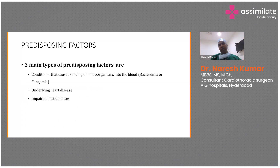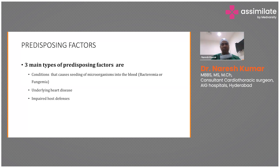Three main predisposing factors have been identified: first, conditions that cause seeding of microorganisms into the blood — bacteremia or fungemia from any procedure; second, underlying heart disease such as rheumatic heart disease causing valve stenosis or regurgitation, mitral valve prolapse causing severe MR, or congenital heart disease; and third, impaired host defenses like leukemia, lymphomas, or other immunocompromised conditions.